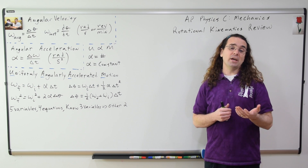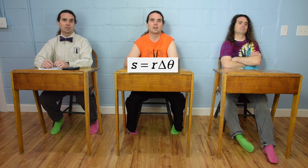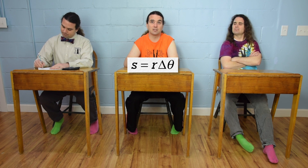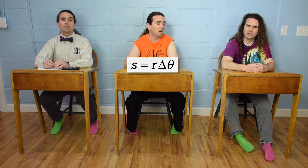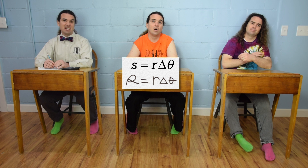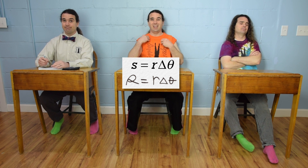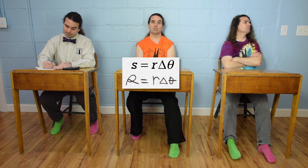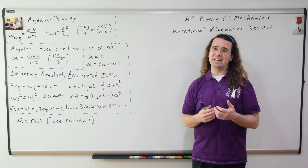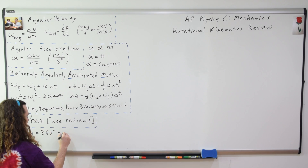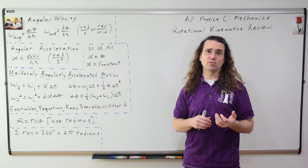Bobby, what is the equation for arc length and what is arc length? The equation for arc length is s equals r delta theta, where s is the arc length, r is the radius of the object moving along an arc, and delta theta is the angular displacement of the object. Mr. P uses a lowercase cursive s because his s's and fives look identical. Arc length is the linear distance traveled by an object when it is moving along part of a circle or arc. You must use radians for the angular displacement when using the equation for arc length.